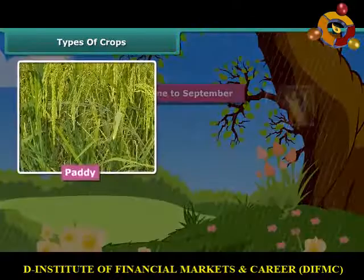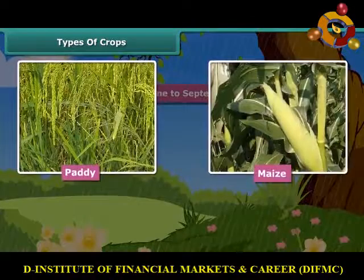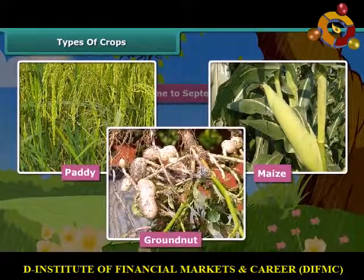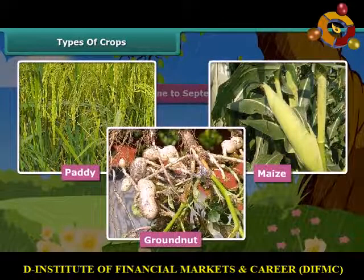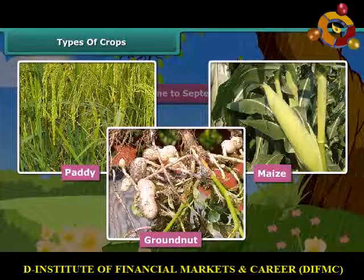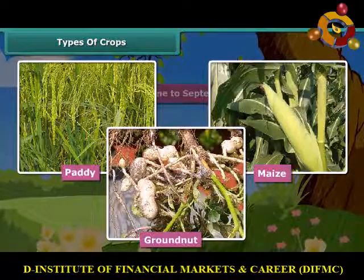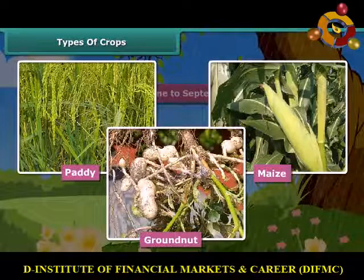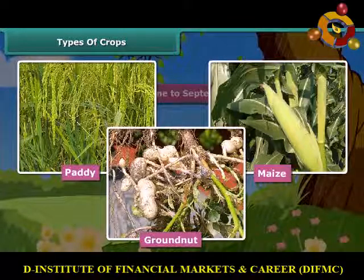Paddy, maize, groundnut, etc. are some common examples of Kharif crops. To grow crops, various activities are performed, which are known as agricultural practices. Let us know them one by one in detail.